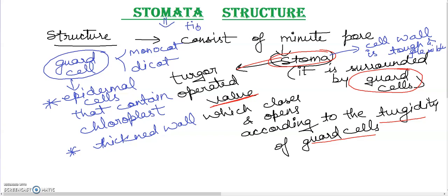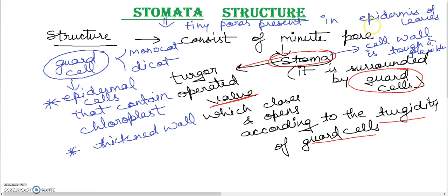Stomata are tiny pores. There are small pore-like structures present in the epidermis of leaves. There may be so many stomata in a centimeter square of leaves — from 1,000 to 60,000 in a centimeter square. If we talk about monocots, they have isobilateral leaves.